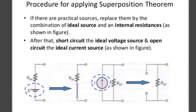Procedure for applying superposition theorem: if there are practical sources, replace them by a combination of an ideal source and an internal resistance. If a current source is present, the internal resistance is connected in parallel. Whereas for a voltage source, the internal resistance is connected in series. If the voltage source is short-circuited, the internal resistance remains. If the current source is open-circuited, the internal resistance remains in parallel.